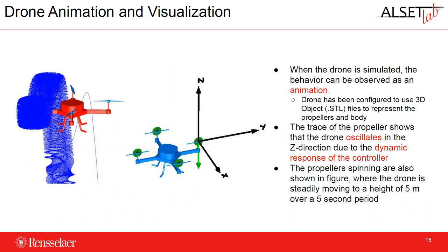When we simulate the model, a new window pops up showing an image of the drone. The drone has been configured to use 3D object files to represent the propellers and the body. On the left is a trace of the drone animating — the blue line on the right shows a singular trace of the body, and the circular response shows the trace of the propeller spinning. This shows some oscillation when the drone reaches its five-meter height due to the dynamics response of the controller, as well as an animation of the drone during simulation.